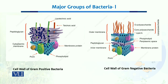Looking at the cell wall composition of gram positive bacteria, they have a cell membrane, and then the cell wall. As we know, the bacterial cell wall is composed of peptidoglycans. Gram positive bacteria have a thick layer of peptidoglycan along with teichoic acid and lipoteichoic acid, which help in building and maintaining that thick peptidoglycan cell wall.